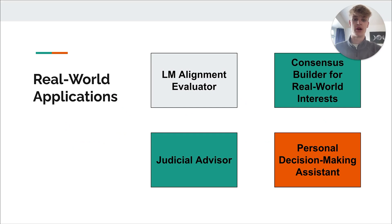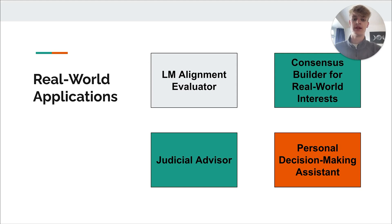The more general automated parliament architecture can help to resolve decision uncertainty in diverse contexts. It can be used as a general evaluator for standard language models, to build consensus between real-world interests such as between corporations or political parties, as a personal decision-making assistant, as a judicial advisor in court settings, and for many more applications.